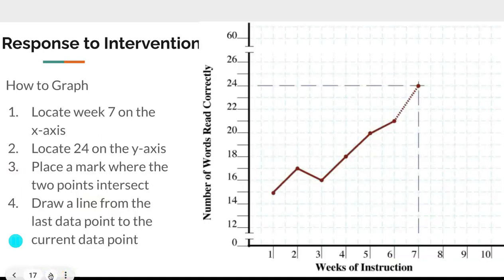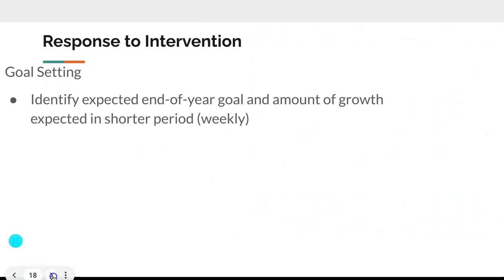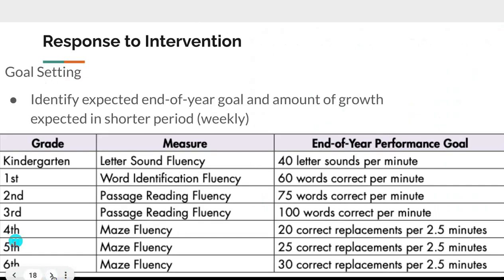To graph a data point, locate week seven on the x-axis and 24 on the y-axis, place a point where they intersect, then draw a line from the last data point to the current one — connecting week six and week seven. That's how you plot the progress lines.